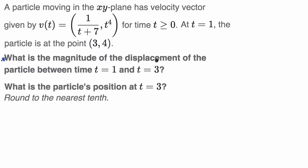Also, if we know the change in x and change in y, we just add the change in x to the three, and add the change in y to the four, to find the particle's position at time t equals three. So let's figure it out.